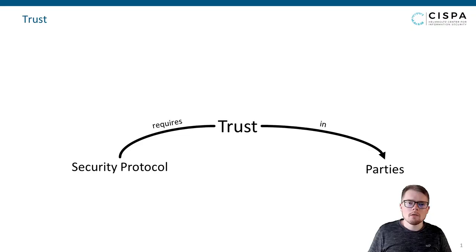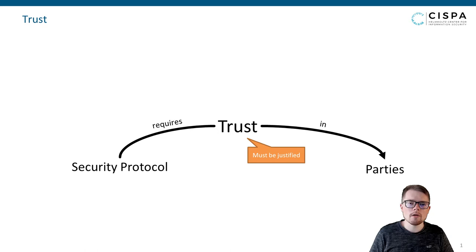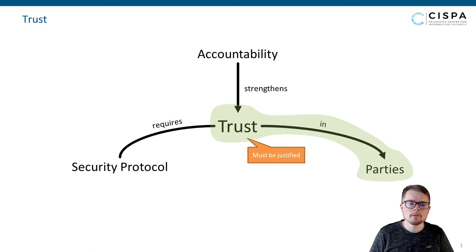In the design of security protocols, trust plays a central role. Without trust in at least some parties, we can achieve very little. However, this trust must be justified, or at least be verifiable. One way to strengthen trustworthiness is to hold parties accountable. The mere possibility of being identified provides an incentive to refrain from malicious behavior.